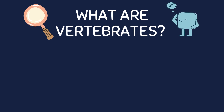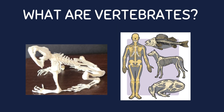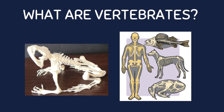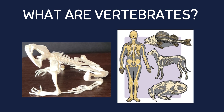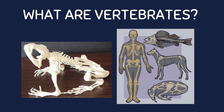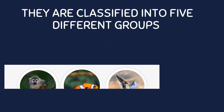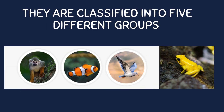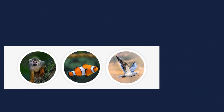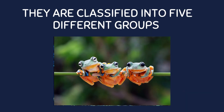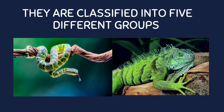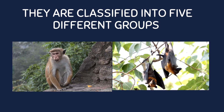What are vertebrates? Vertebrates are a group of animals that have a backbone or a spinal column. We are classified into five different groups: fish, amphibians, reptiles, birds, and mammals.